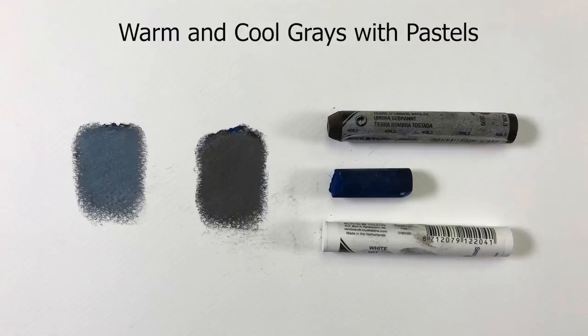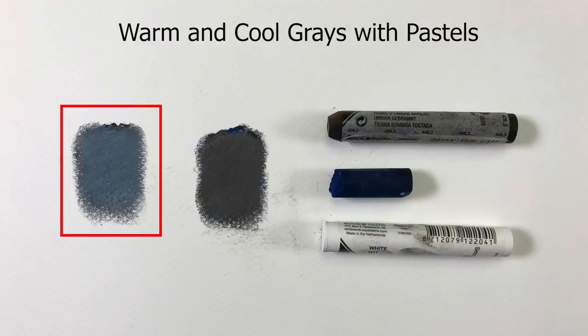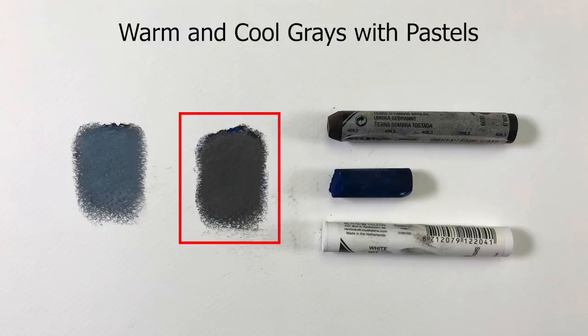Here's a look at warm and cool grays mixed with pastels. In this case, a darker blue is layered over the top of a darker brown. This mixture is gently blended before layering a light layer of white over the top — the result is a cool gray. In the second example, the darker brown is layered over dark blue, blended, and then layered over with a light application of white. The result is a warm gray.